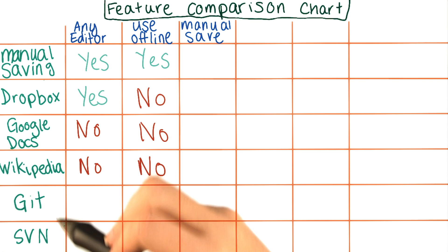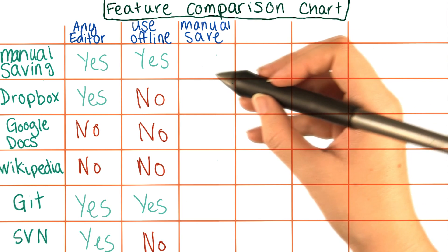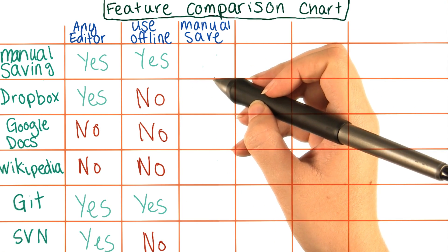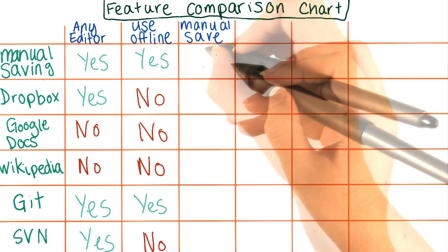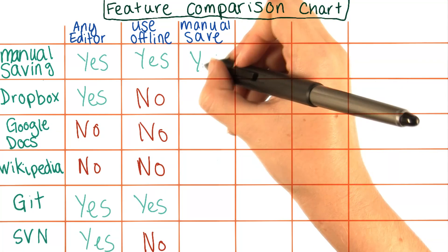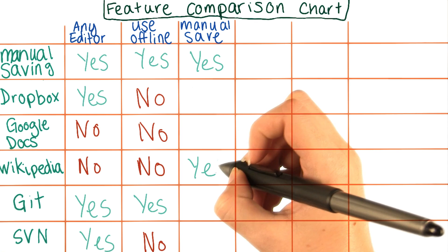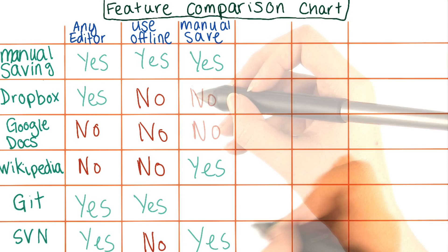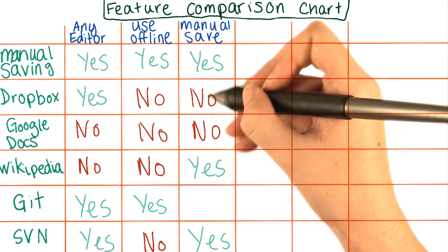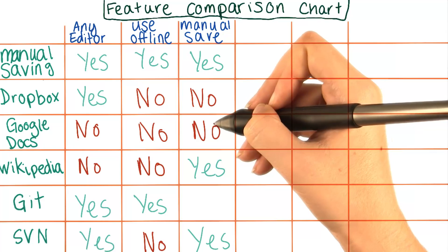Let's go ahead and fill in the chart for our new entries. So which of these systems have the user manually saving versus autosaving? Well, clearly manual saving requires you to manually save. Wikipedia also requires this, so does SVN. Dropbox and Google Docs, on the other hand, save versions for you whether or not you manually save.